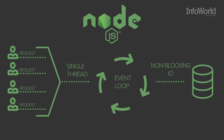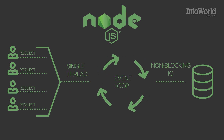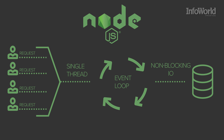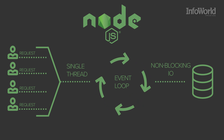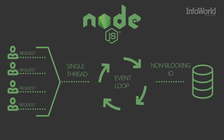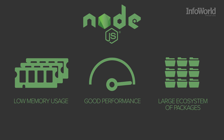It uses an event-driven, non-blocking I/O model that makes it lightweight and efficient and perfect for data-intensive real-time applications that run across distributed devices. Node offers many benefits including low memory usage, good performance, and a large ecosystem of packages currently numbering about four hundred and seventy-five thousand.